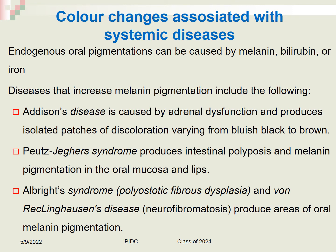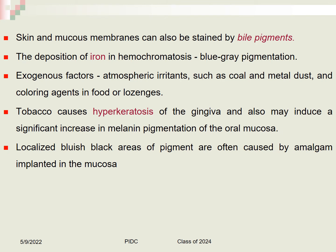Endogenous oral pigmentation can be caused by melanin, bilirubin, and iron. Exogenous causes also include conditions such as Addison's disease, Peutz-Jeghers syndrome, and Albright's syndrome, which produce varying patches of bluish-black discoloration around the oral mucosa, lips, skin, and mucous membranes. Iron deposition in hemochromatosis results in blue-gray pigmentation of the mucosa. Tobacco causes hyperkeratosis of the gingiva and may induce slight increase in melanin pigmentation. Localized bluish-black areas are often caused by amalgam implanted in the mucosa.